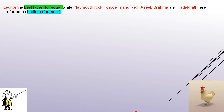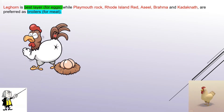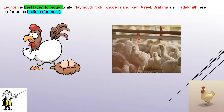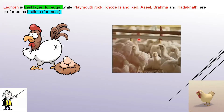Poultry birds are domesticated for two purposes: laying of eggs and meat. Leghorn is the best layer for eggs — since they lay eggs, they are called layers. Whereas Plymouth Rock, Rhode Island Red, Asil, Brahma, and Kadaknath are preferred as broilers, specially for meat. Broilers are fluffy and their meat content is of high quality. So remember: Leghorn is the best layer, while the others are preferred broilers.